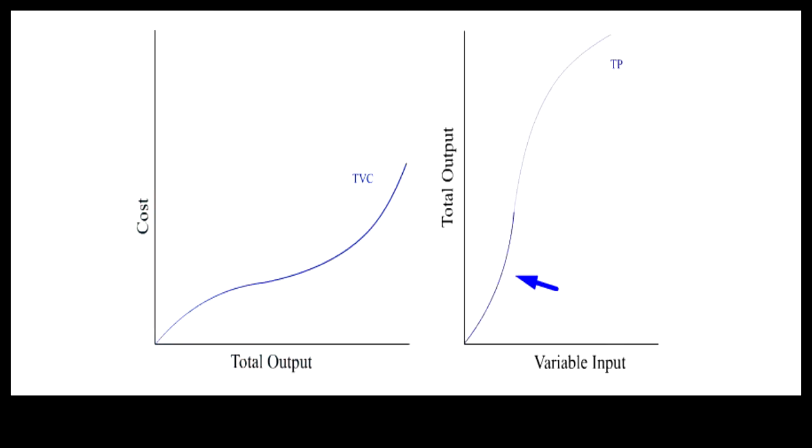The increasing slope segment of TP is mirrored by the decreasing slope segment of TVC. The decreasing slope segment of TP is mirrored by the increasing slope segment of TVC. The inflection point of TP is mirrored by the inflection point of TVC.